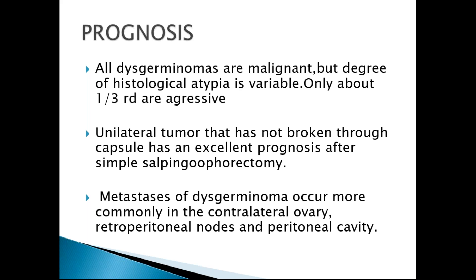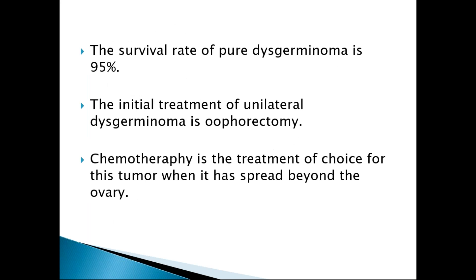Coming to the prognosis, all dysgerminomas are malignant, but the degree of histologic atypia is variable. Only about one-third are aggressive. A unilateral tumor that has not broken through the capsule has an excellent prognosis after simple salpingo-oophorectomy. Metastasis occurs more commonly to the contralateral ovary, retroperitoneal nodes, and peritoneal cavity. The survival rate of pure dysgerminoma is 95%. Chemotherapy is the treatment of choice if the tumor has spread beyond the ovary.